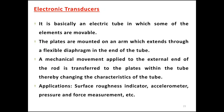In the previous session, we discussed about some important transducers. Let us see some other transducers like electronic transducers. It is basically an electronic tube in which some of the elements are movable. Electronic transducers are usually used in electronic components in order to convert the mechanical inputs into suitable electronic outputs. Some of the parts inside the electronic transducers are movable and have some flexibility in producing the output. The plates are mounted on an arm which extends through a flexible diaphragm in the end of the tube. A mechanical movement applied to the external end of the rod is transferred to the plate within the tube, thereby changing the characteristics of the tube.